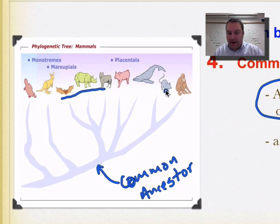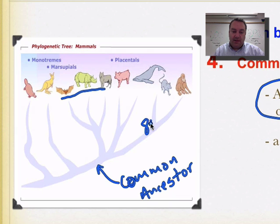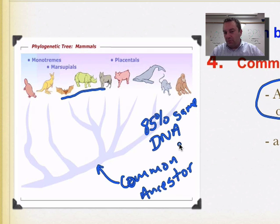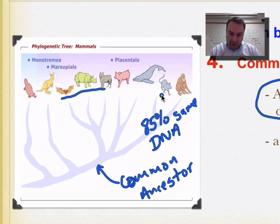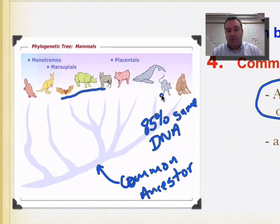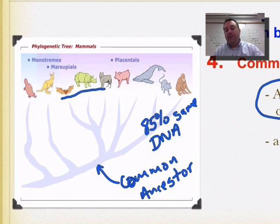Notice that the mouse or rat is closest to humans on this tree. That's because mice and humans share 85% of the exact same DNA, showing we are quite genetically related. This illustrates the power of even a 15% difference in DNA to create greatly different species. The biggest piece of evidence for the tree of life is that large chunks of the genome from a human and a platypus are very similar because at some point they shared a common ancestor.